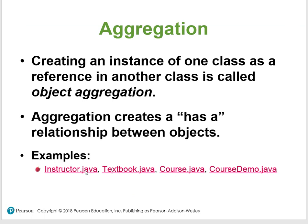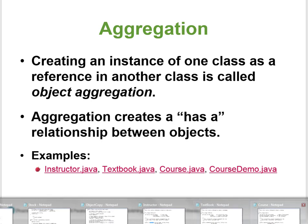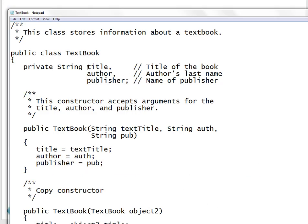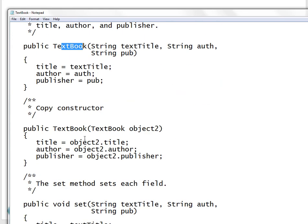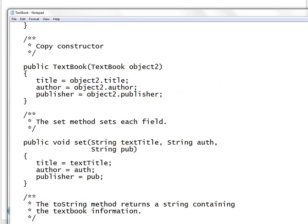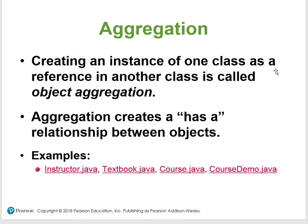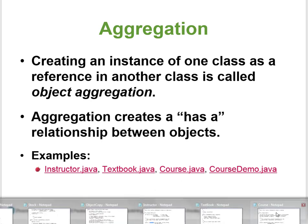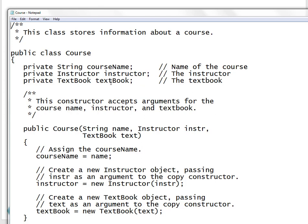All these Java classes work with one another. Now let's take a look at the second one, the Textbook class. The textbook has its fields, a constructor, a copy constructor, and so on.